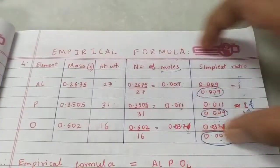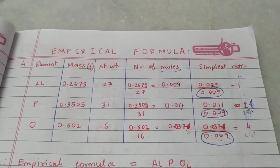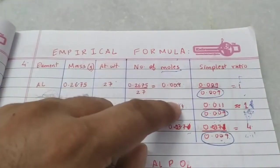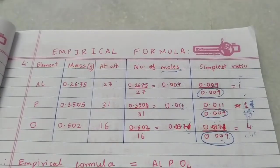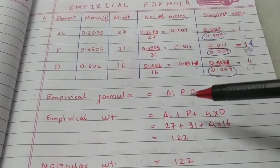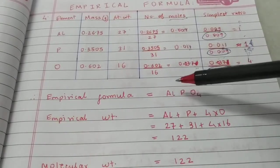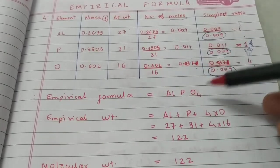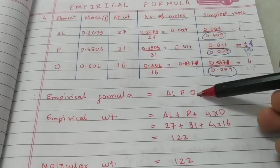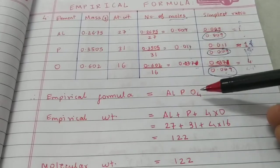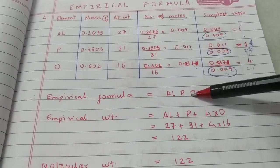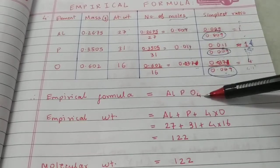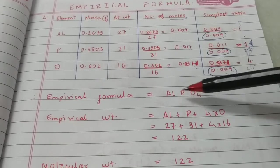Now you've understood how to make the table — that was the first step. Prepare the table and get the simplest ratio. The empirical formula: write the elements in order — aluminum, phosphorus, oxygen — with the ratio 1:1:4, giving AlPO4. Note this looks like aluminum phosphate, but it's an empirical formula, a reduced version. The molecular formula could be a multiple of this, like Al3P3O12 (multiplying by 3), or multiplied by 2 or 10.